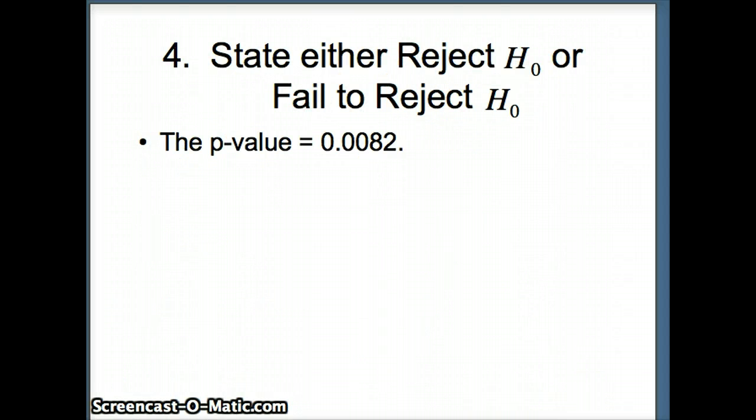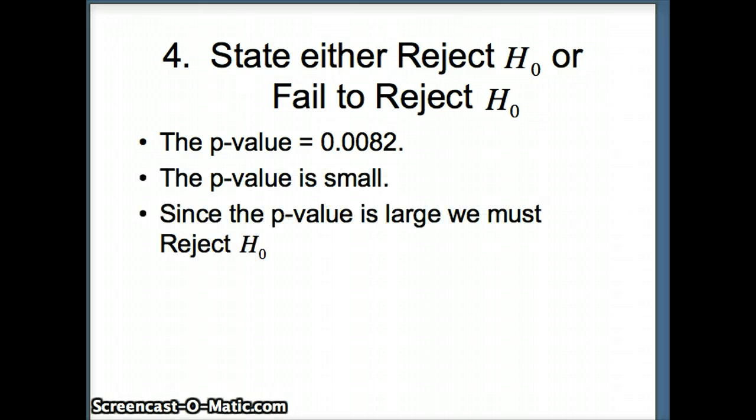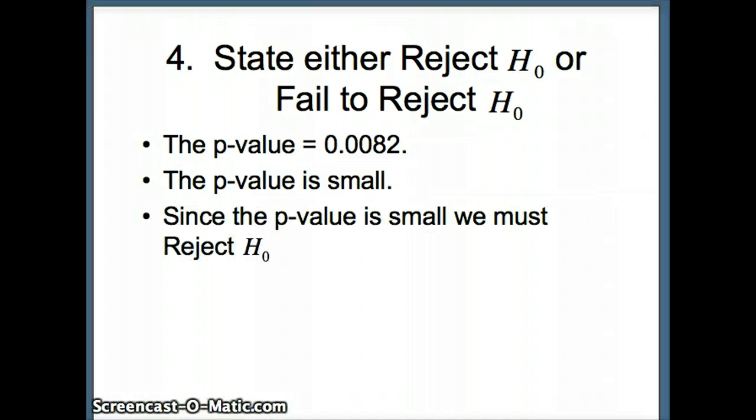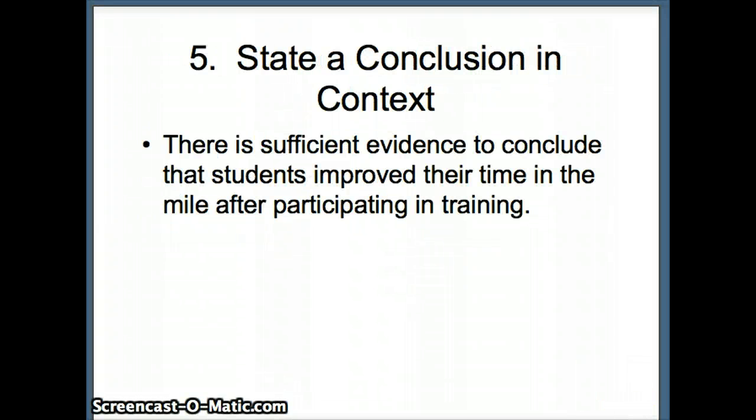So now we have to either reject H-naught or fail to reject H-naught. The p-value is small. Just quickly corrected a typo. The p-value is small, so we must reject H-naught. So in this case, we have sufficient evidence to conclude that students improved their time in the mile after participating in the training.